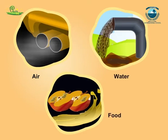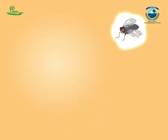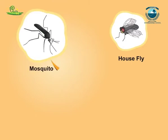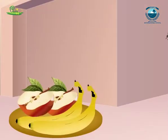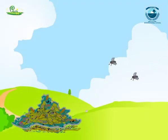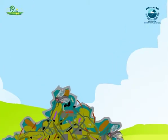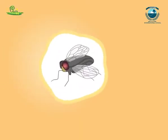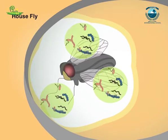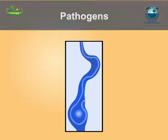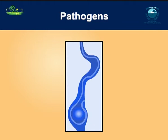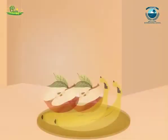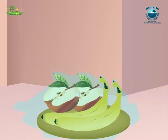Carriers of disease include air, water, food, and vectors like housefly and mosquito. The housefly sits on garbage and animal excreta, and pathogens stick to their bodies. When these flies sit on uncovered food, they may transfer the pathogens. Whoever eats the contaminated food is likely to get sick, so it is advisable to always keep food covered.